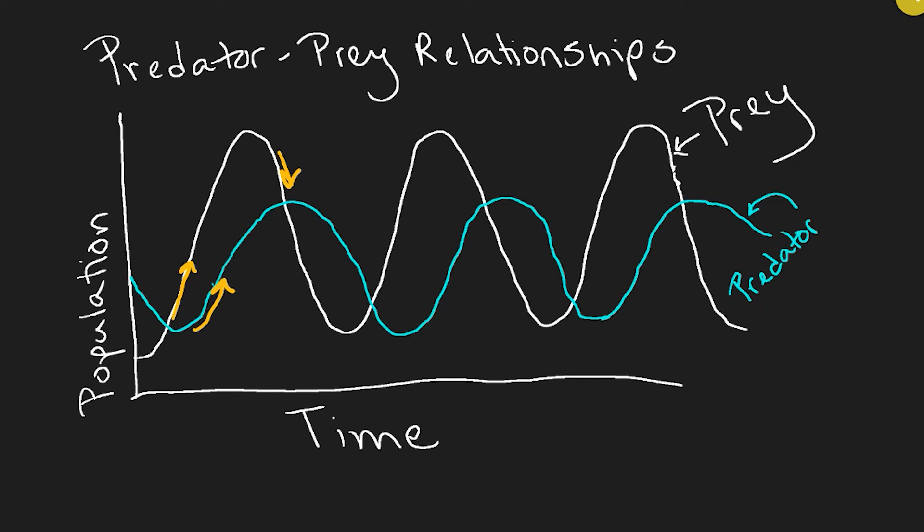We'll see the prey decrease first, followed by the predator. The predator-prey relationship is really important — remember that they are dependent upon each other, so a change in one will result in a change in the other. Now you have the information you need to be able to make a predator-prey relationship graph, read a predator-prey relationship graph, or answer questions about a predator-prey relationship graph.